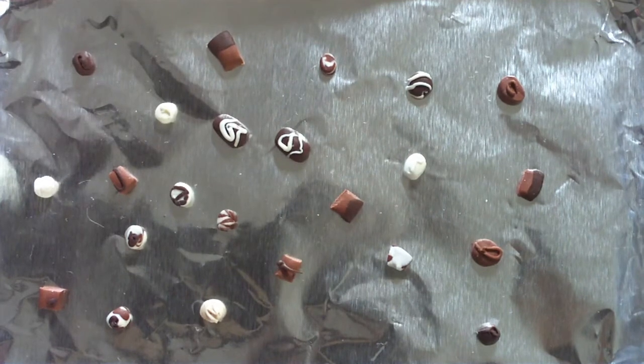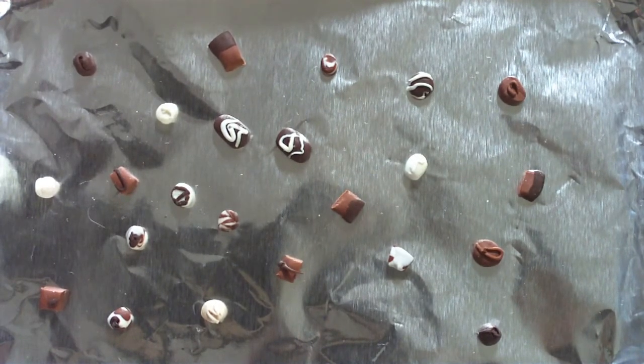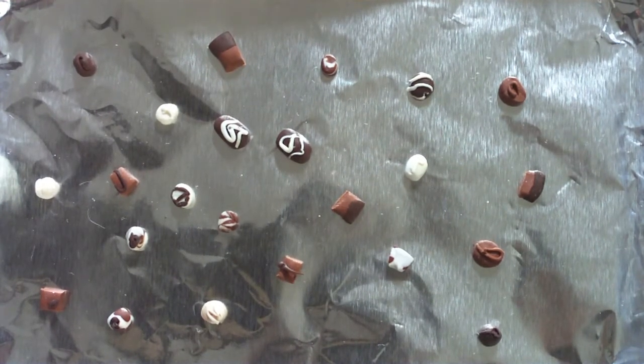Now we have a nice big selection of chocolates. Put them on a tray of aluminum foil and bake them in a 275 degree oven for about 10 minutes.